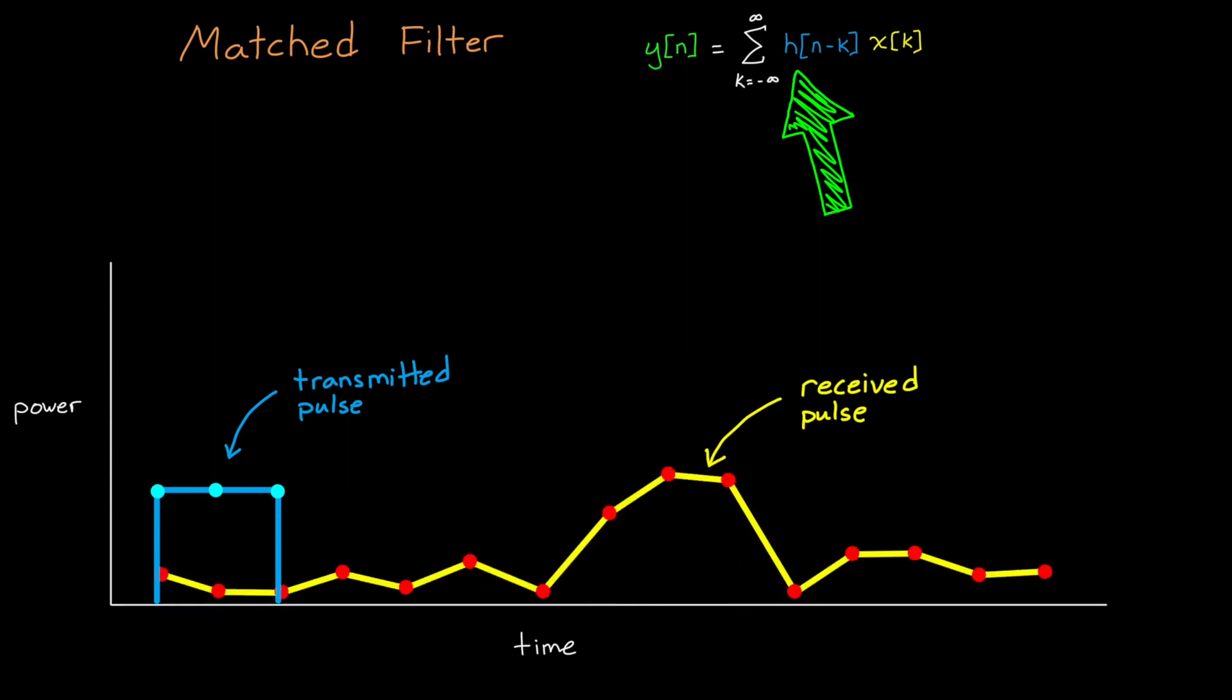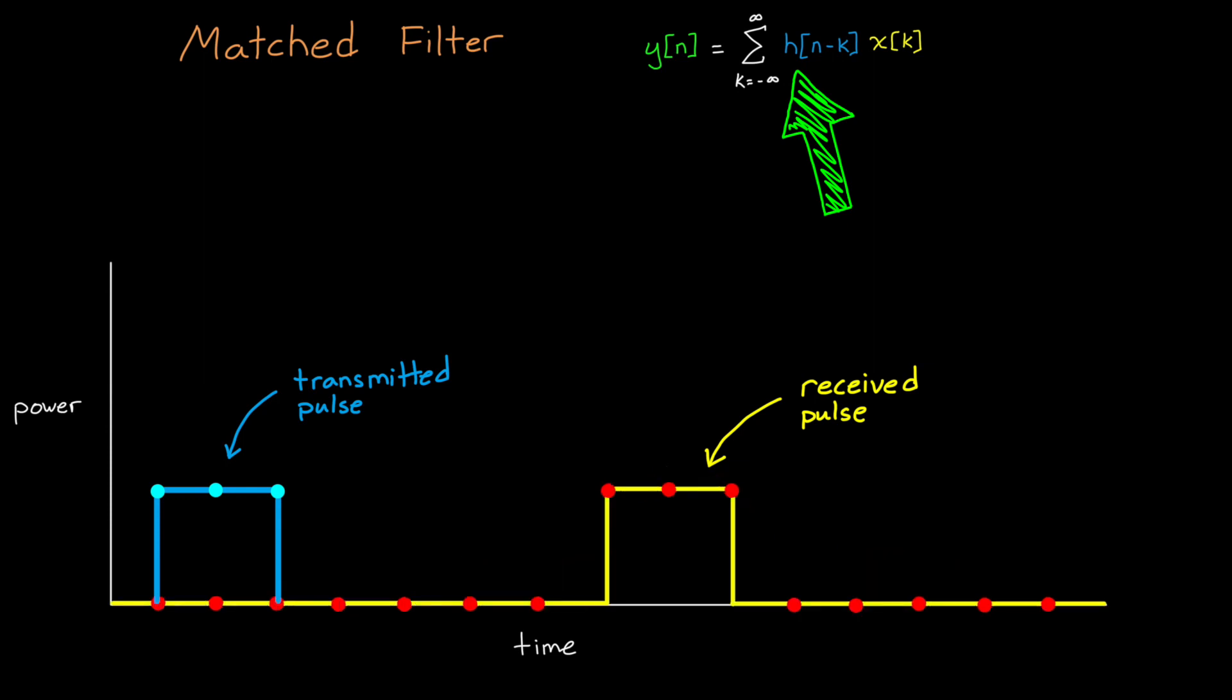There will be noise, like we talked about, but if we just consider the signal itself, then it has this rectangular shape. The received signal is X in our equation.